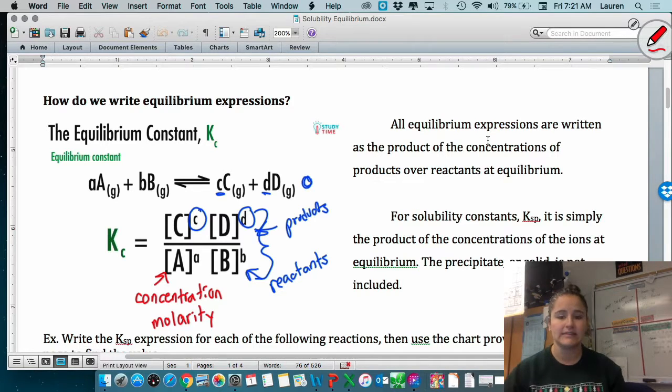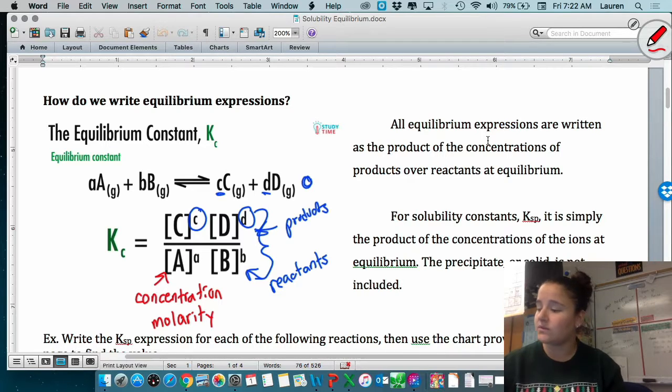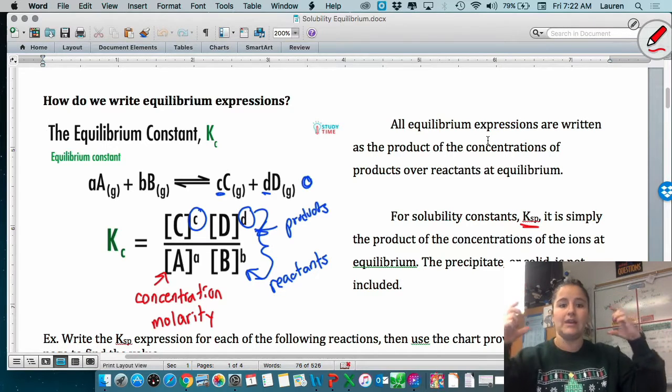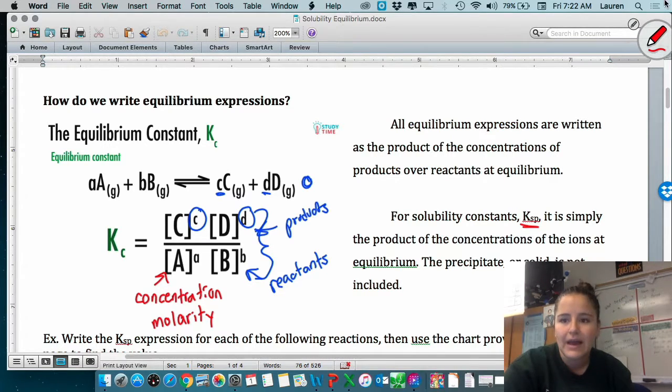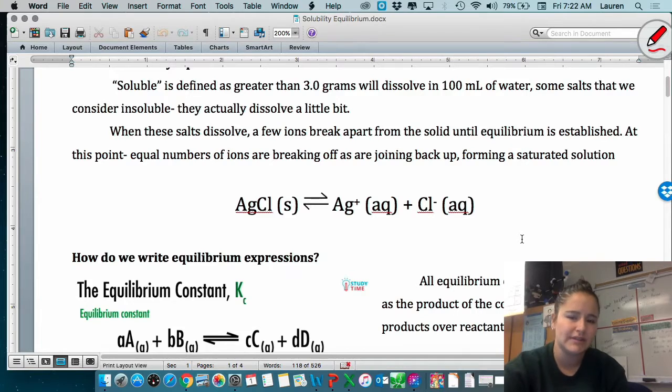Products over reactants. Another important note is that solids and liquids do not get included in the equilibrium expression. Which makes it really easy for solubility constants because we're only going to have the ions. We're not going to have a solid. So when we're writing Ksp, there's never going to be a denominator. It's only going to be those ions. If we look back up here, it would only be the silver and the chloride.